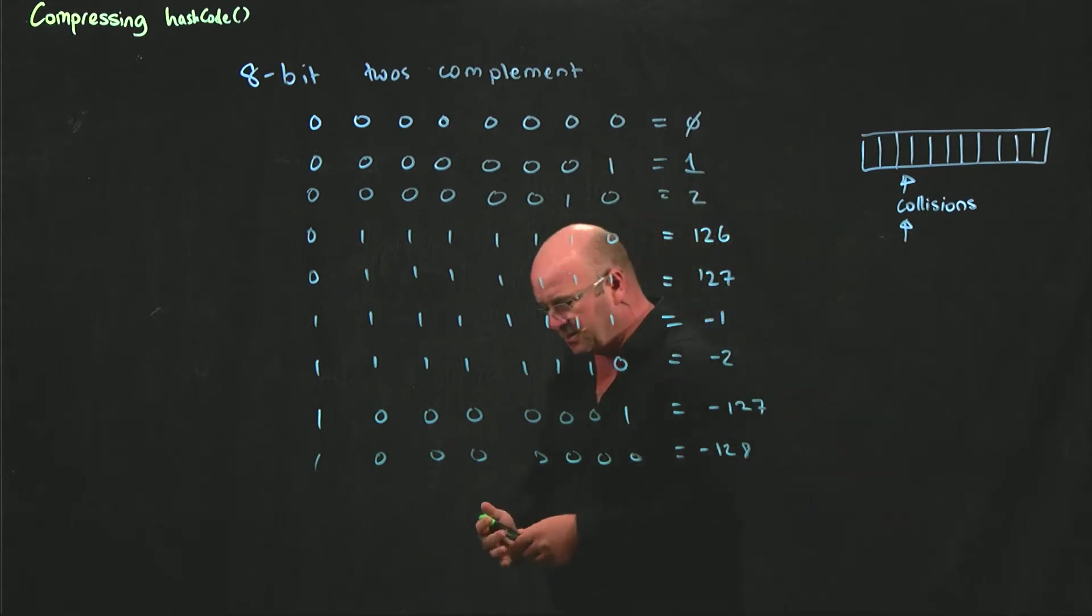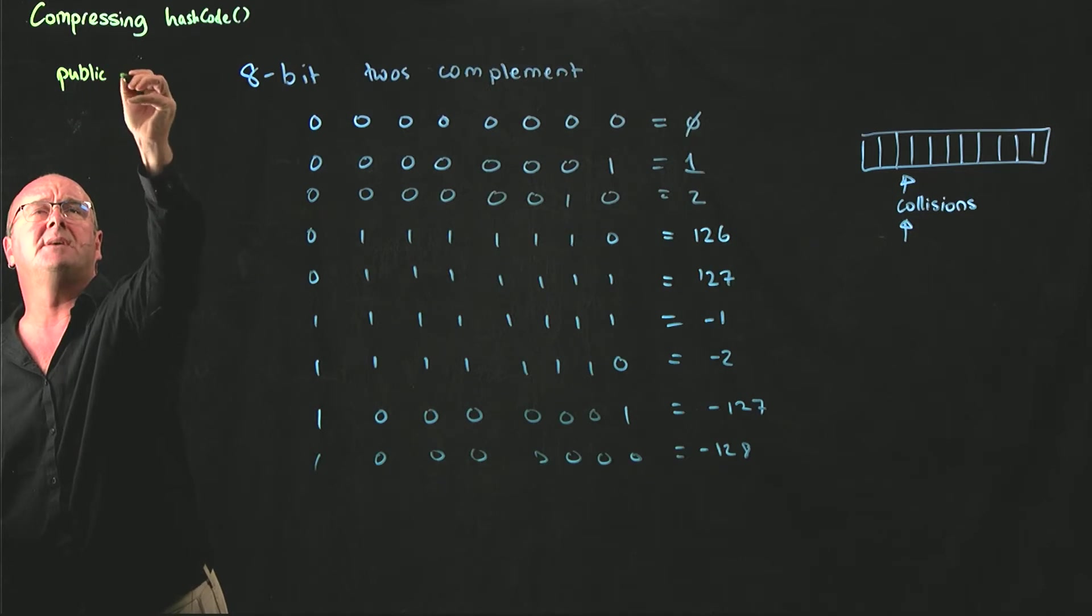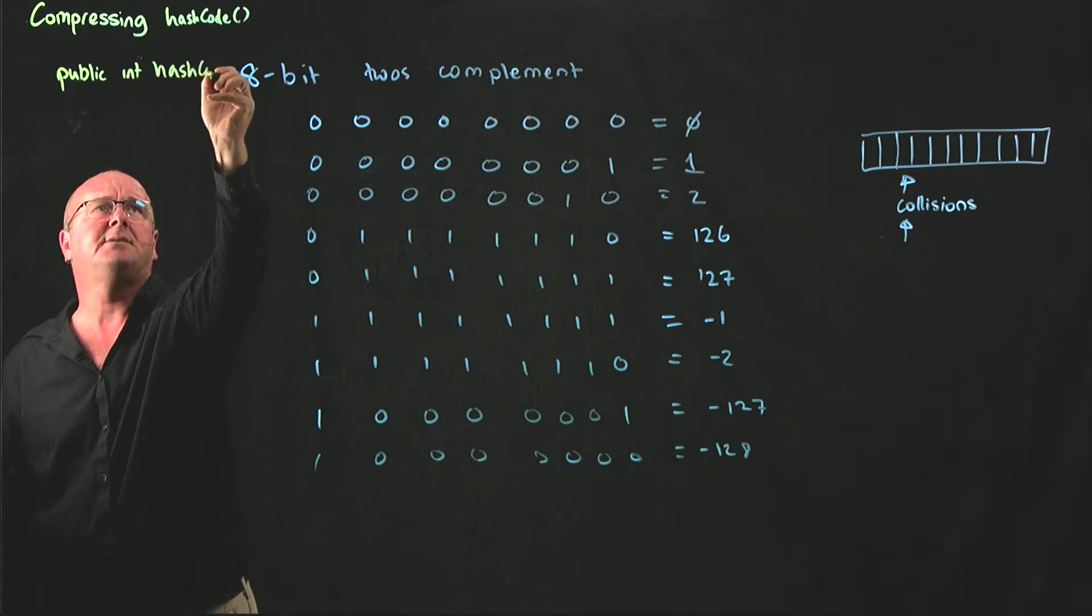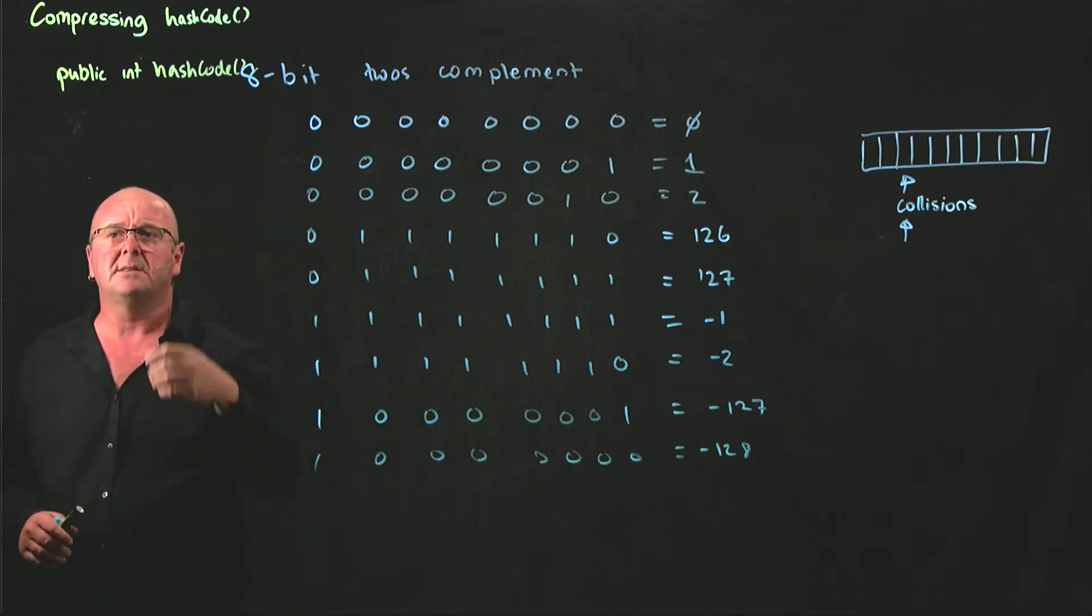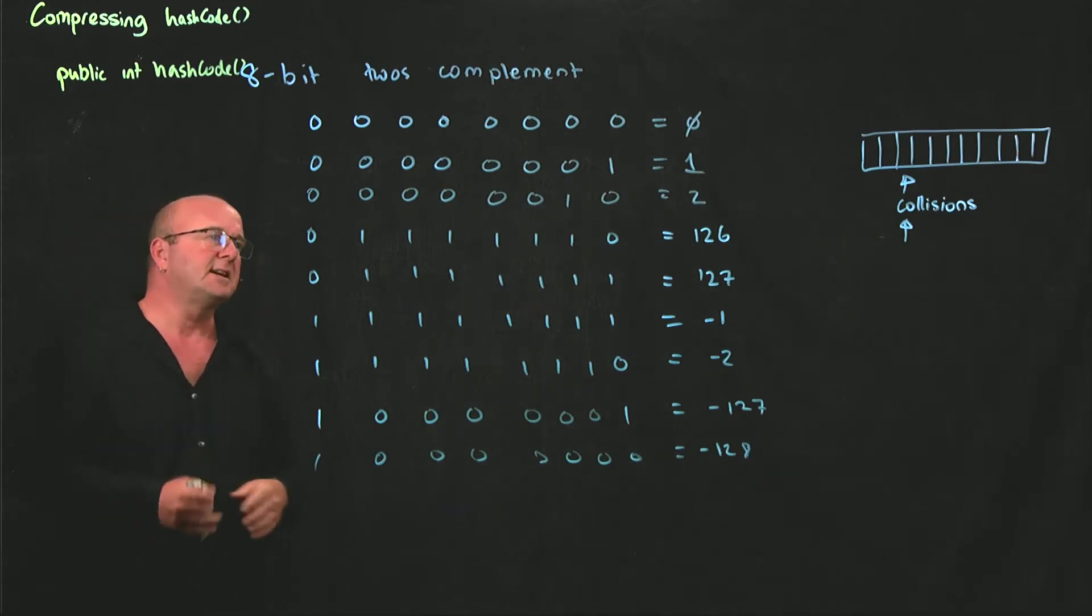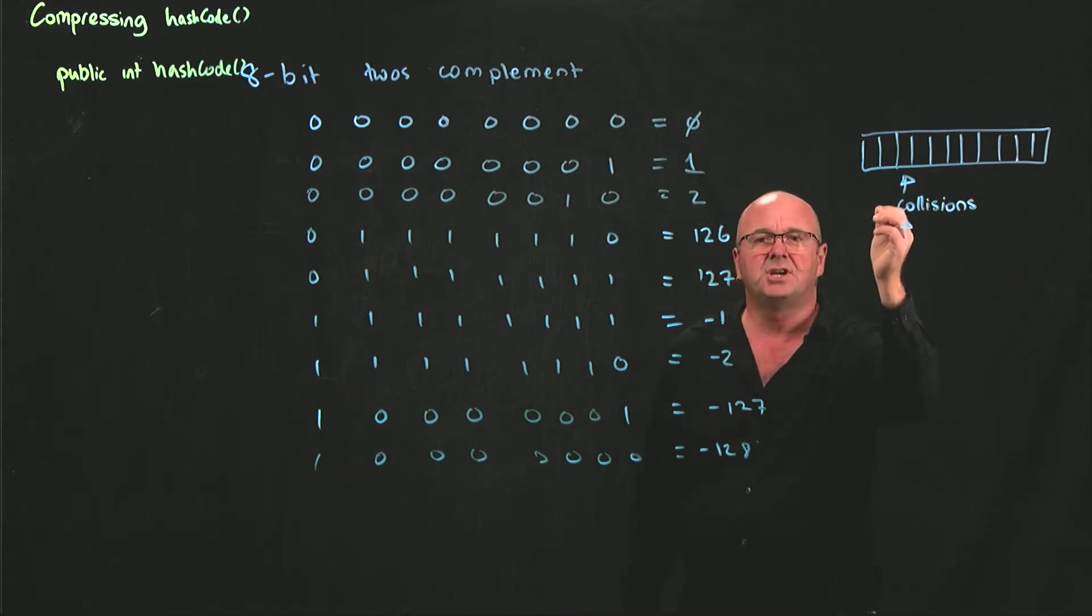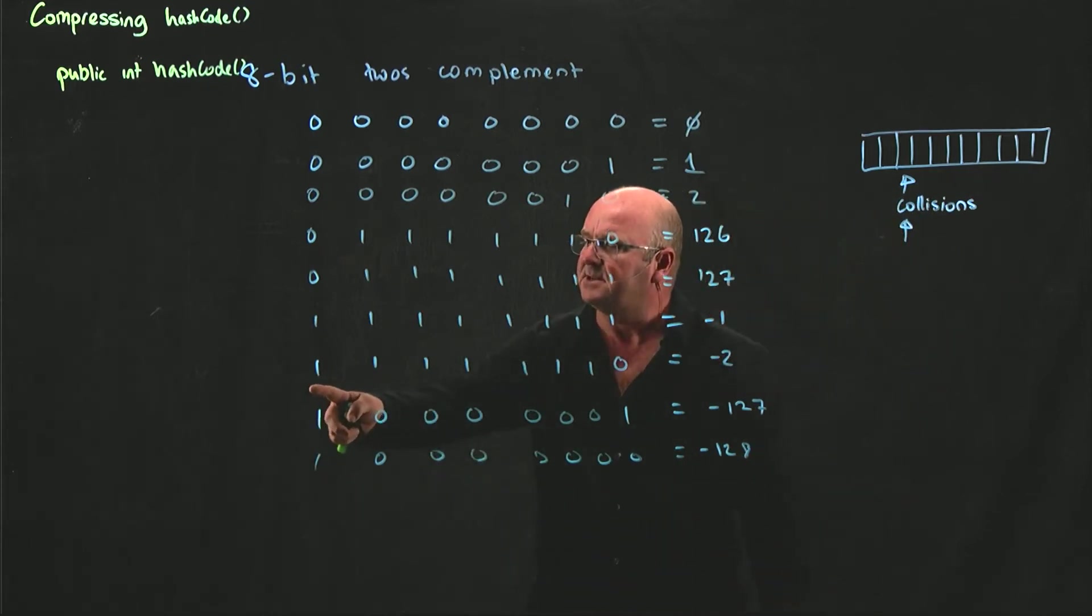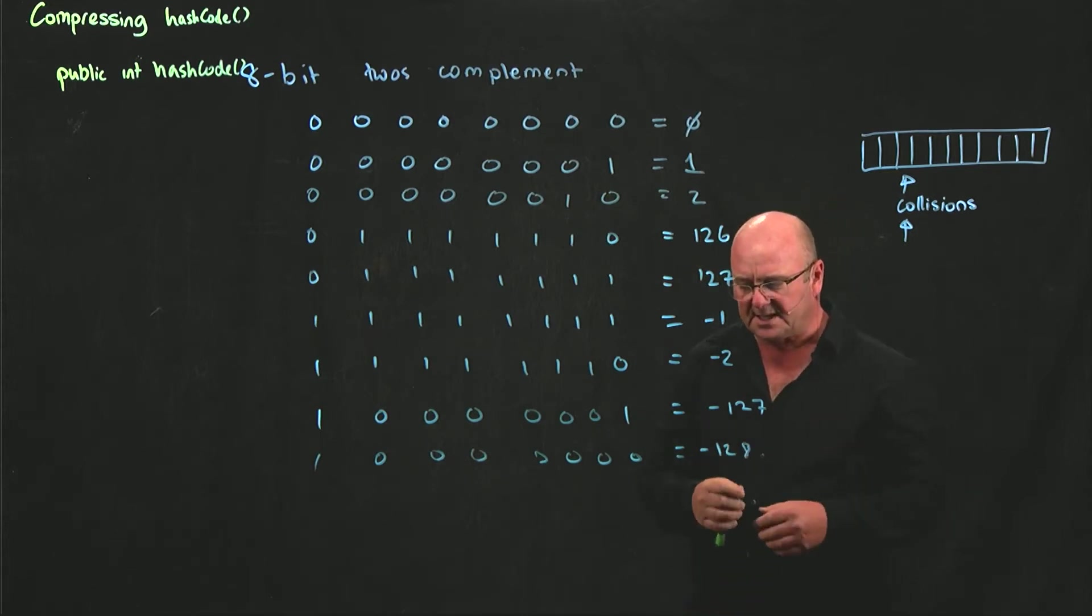So our hash code function that has the signature public int hash code can return a number that can be negative or positive. To compress that into our table, we can change the first bit of the number so that the first bit changes from a 1 to a 0. Or if the first bit is already a 0, we just leave it as a 0.